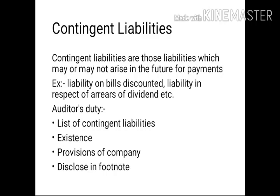The last item to discuss is contingent liabilities. Contingent liabilities are those liabilities which may or may not arise in the future for payment. Examples include liabilities on bills discounted and liability in respect of arrears of dividends. One important thing to keep in mind: contingent liabilities are not shown on the liability side of the balance sheet — they will appear in the footnote.